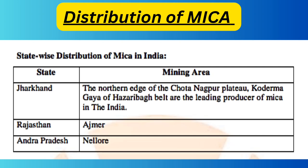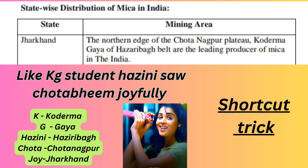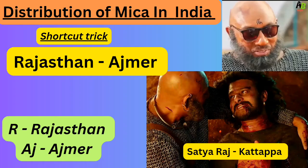The first trick is: 'Like KG student Hasini saw Chota Bim joyfully.' K represents Koderma, G represents Gaya, Hasini represents Hazaribagh, Chota represents Chota Nagpur, and Joy represents Jargon. These are all mica mining areas in Jharkhand. Look at this image for reference.